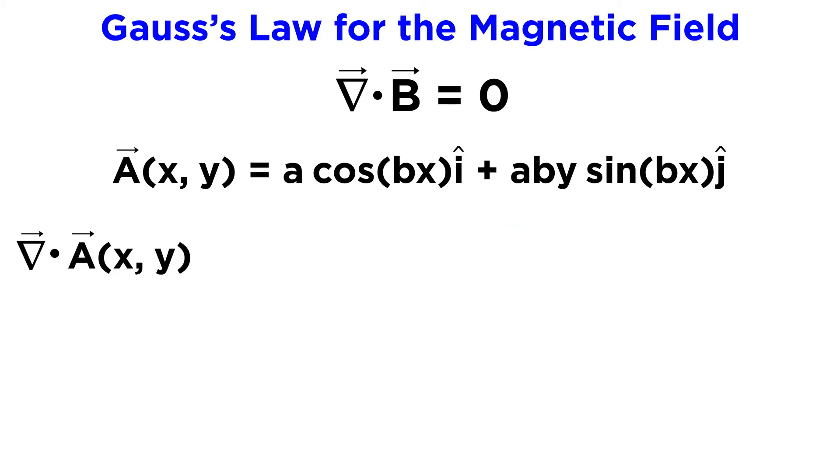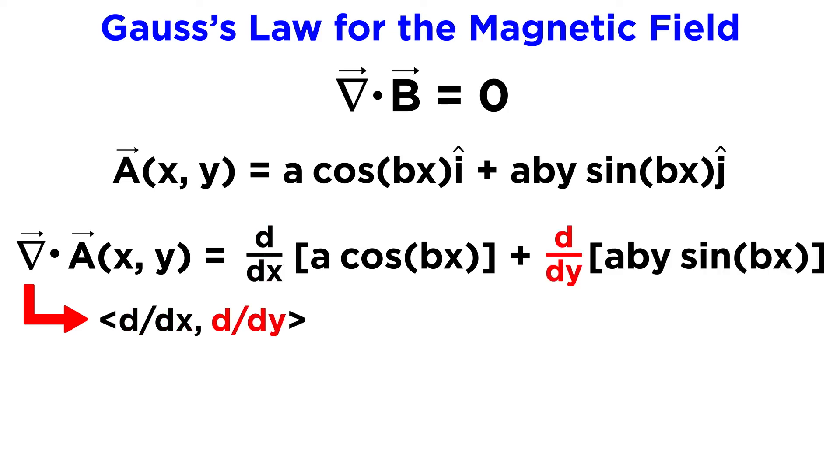So we can apply the del operator here on the left, and remember that means we are now taking a dot product with a vector containing the partial differential operators, so we end up with d/dx applied to the first term plus d/dy applied to the second term, and we have removed the unit vectors for simplicity.